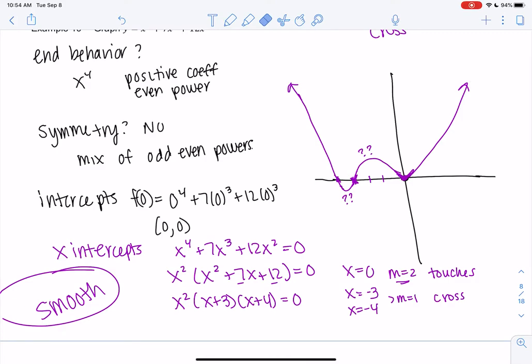And that's our graph. You'll see there's no symmetry. The main things we're doing is end behavior is correct and behavior at the zeros. And then the remainder of the graph is a little bit of a guess.